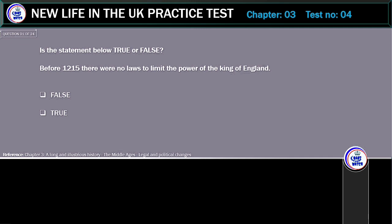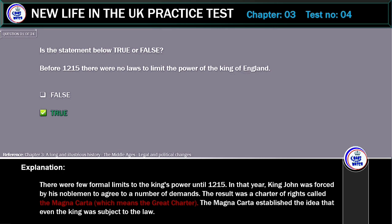Is the statement below true or false? Before 1215 there were no laws to limit the power of the King of England. The correct answer is True. There were few formal limits to the King's power until 1215. In that year King John was forced by his noblemen to agree to a number of demands. The result was a charter of rights called the Magna Carta, which means the Great Charter. The Magna Carta established the idea that even the King was subject to the law.